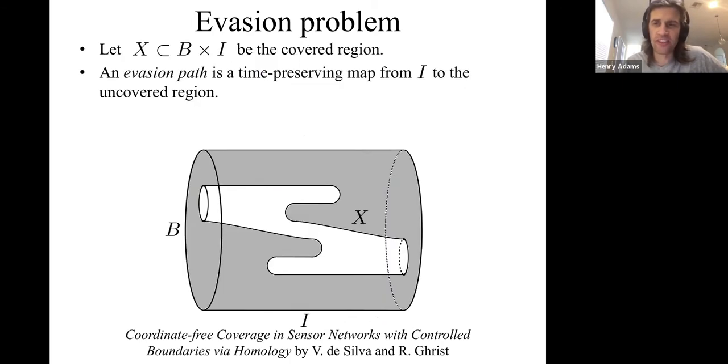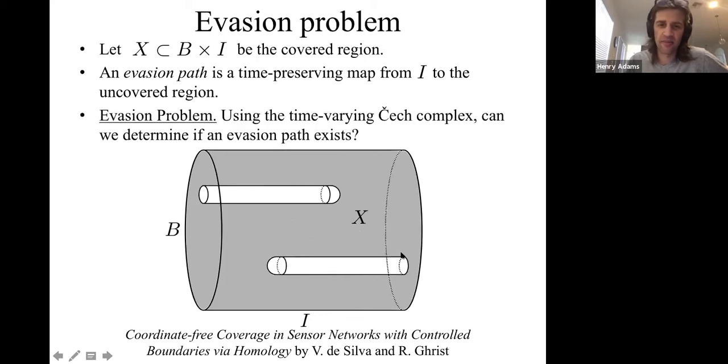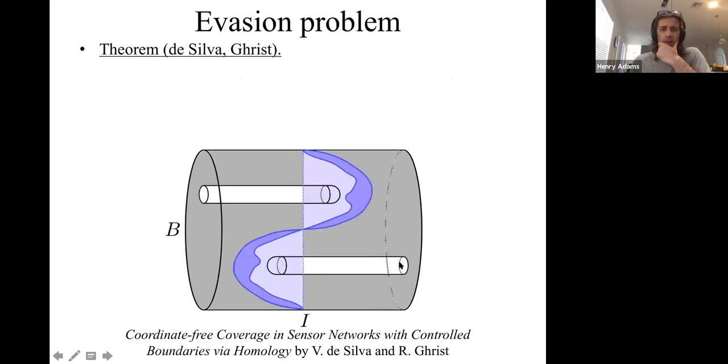We'll draw pictures in space across time where my planar domain is this oval and then time is moving from left to right. The gray covered region in space-time is covered by the sensors, and the white region is the uncovered region where an intruder can move continuously and evade the sensors. But in this example, an intruder couldn't continuously evade the sensors because you can't teleport.